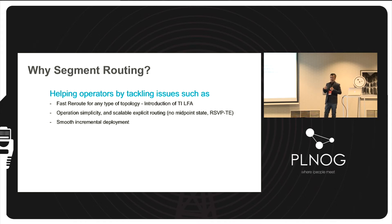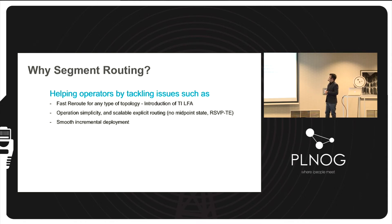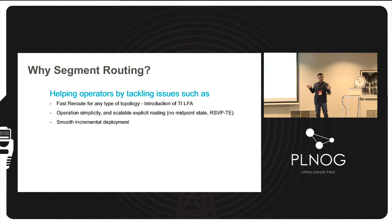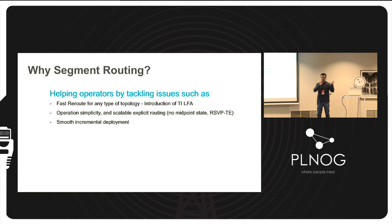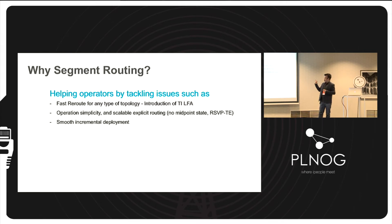With segment routing, the operations of the network infrastructure are very simple and scalable when it comes to explicit routing or traffic engineering. Specifically, we get rid of RSVP-TE — no more midpoint states. In the current world with RSVP-TE-based traffic engineering, you have head-end and tail-end, you create many tunnels, but all the devices in the core also need to keep state for all those tunnels. With segment routing, that simply vanishes — there is no more state in the midpoint. State is kept only on the egress devices or on the SDN controller.